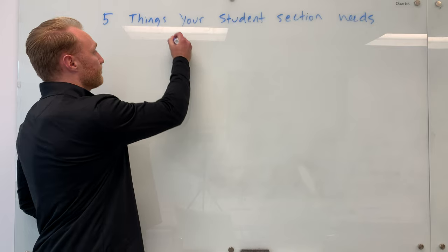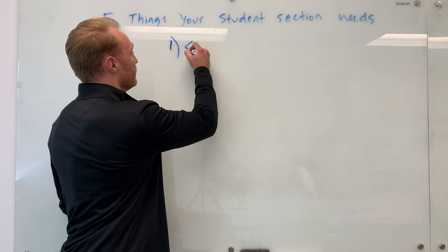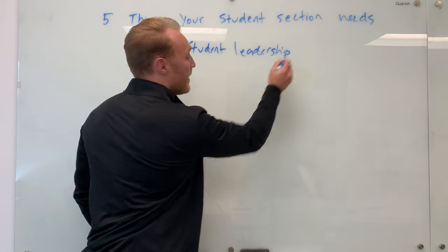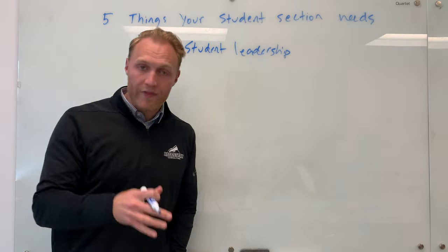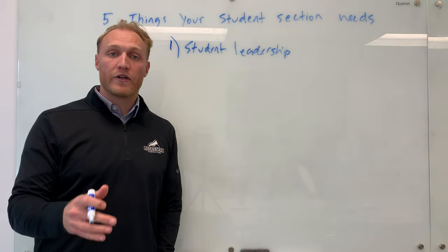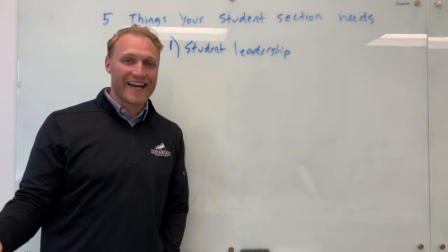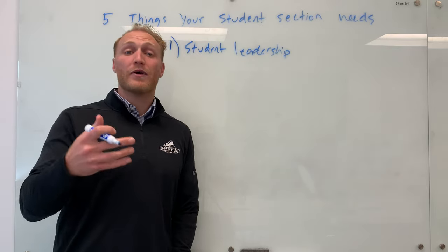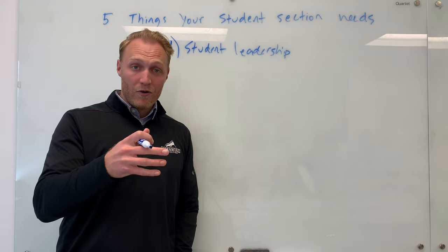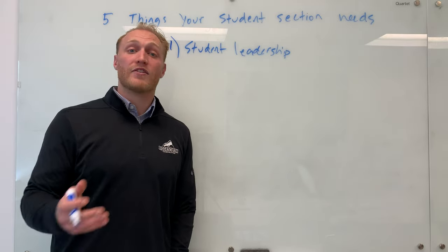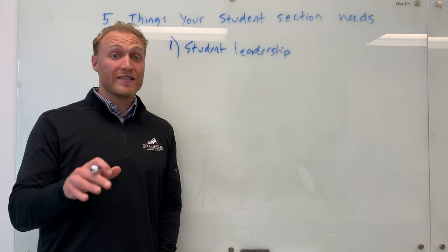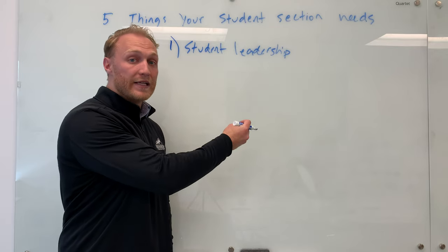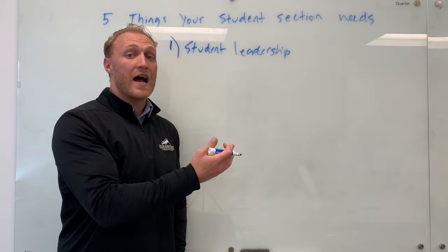If your school only has four out of five or zero out of five, you really need to evaluate and put your heads together with your team and ask why you don't have all five, because all five are essential — not just for a student section, but for a student section to be great. Number one: student leadership.